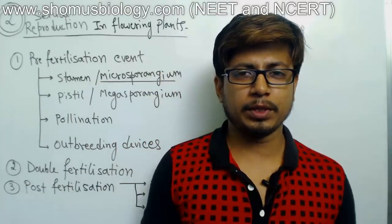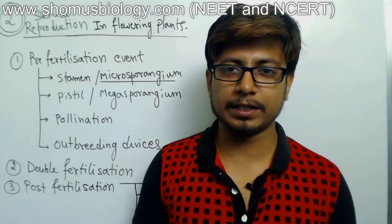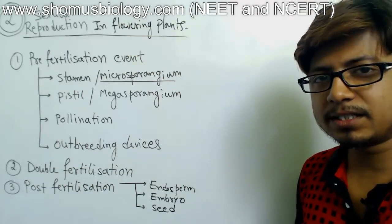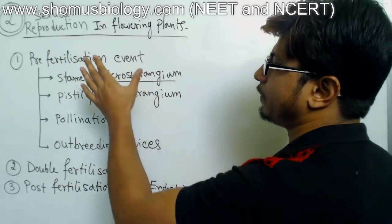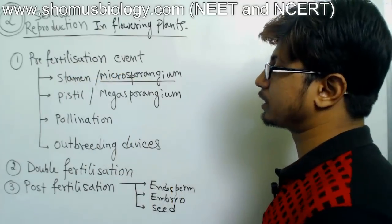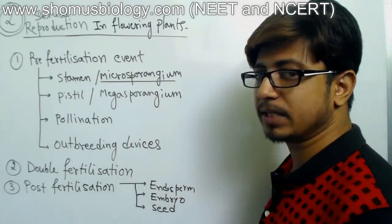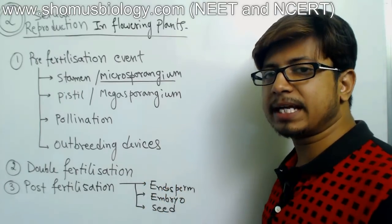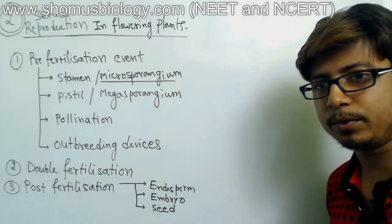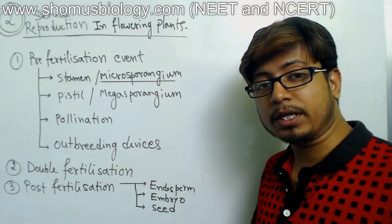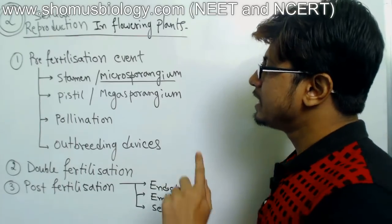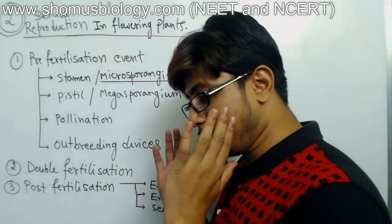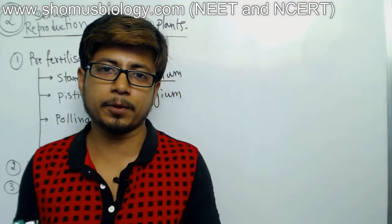Welcome back friends, welcome to another part of understanding sexual reproduction in flowering plants. In the last lecture we talked about the pre-fertilization event, especially the morphology of the stamen, which is the male reproductive part of a flower, and how they produce the male gamete — the microspore converted to pollen grains. Now we will talk about the morphology of the pistil, which is the female reproductive part of the flower.